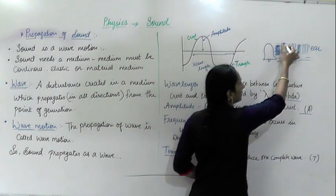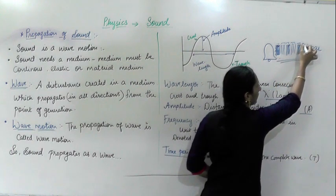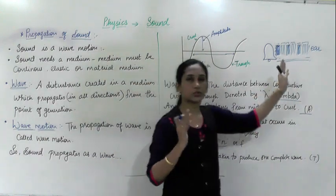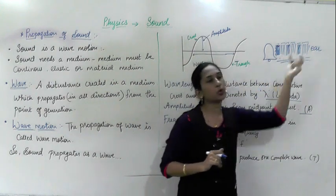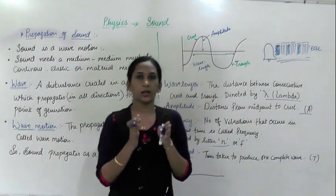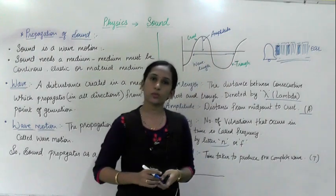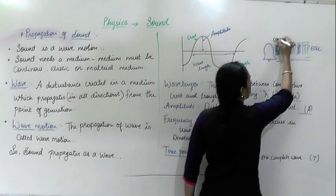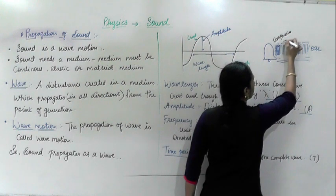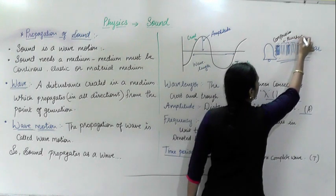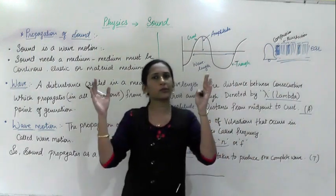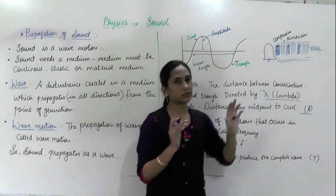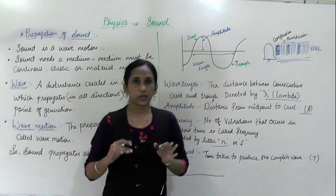You can see: high density part, low density part, high density, low density — high, low, high, low — this way the vibration reaches our ear. Specific names are given to these parts. Where the high density is, that part is called compression. The low density part is called rarefaction. Compression is where air molecules get compressed, and rarefaction is where there is low density. This is how sound propagates.